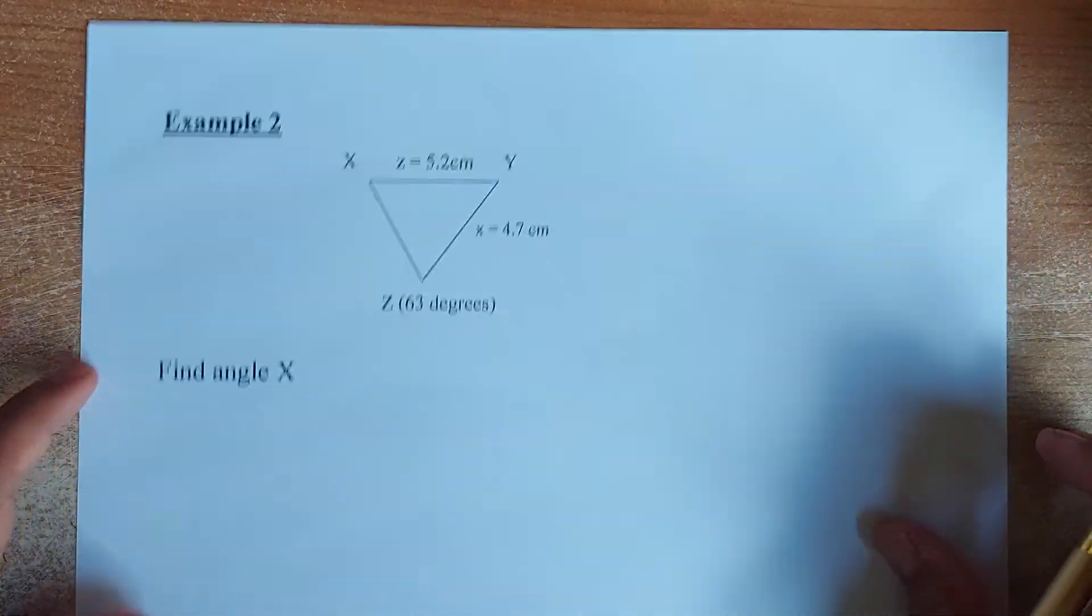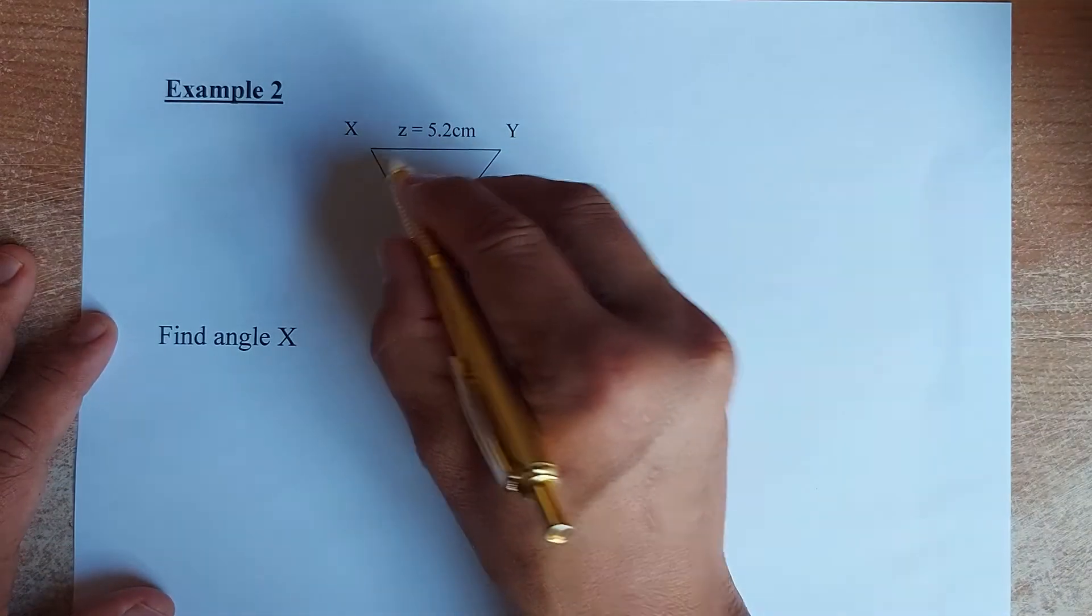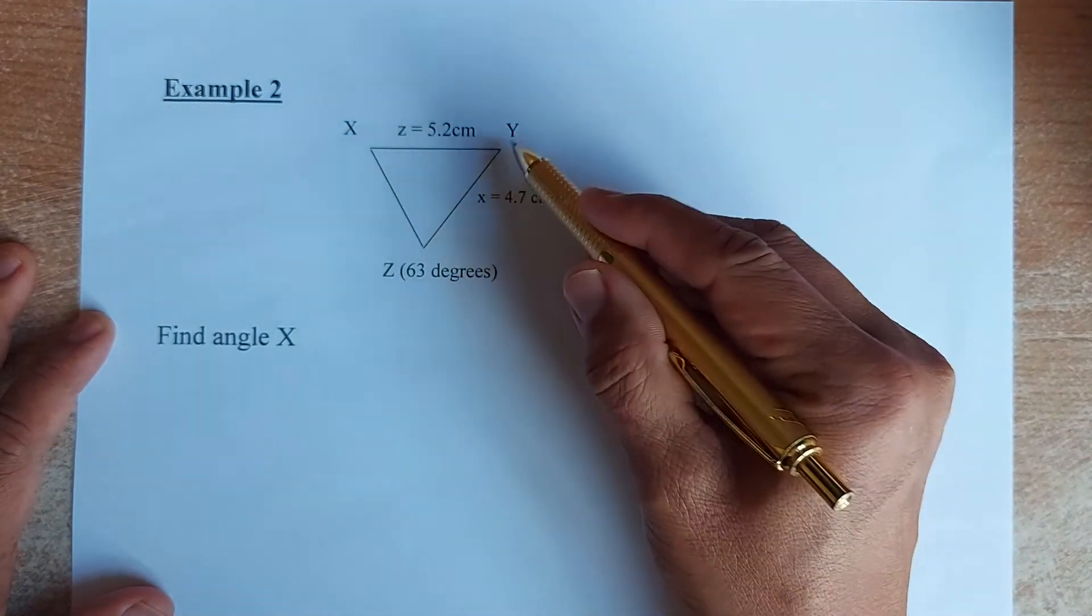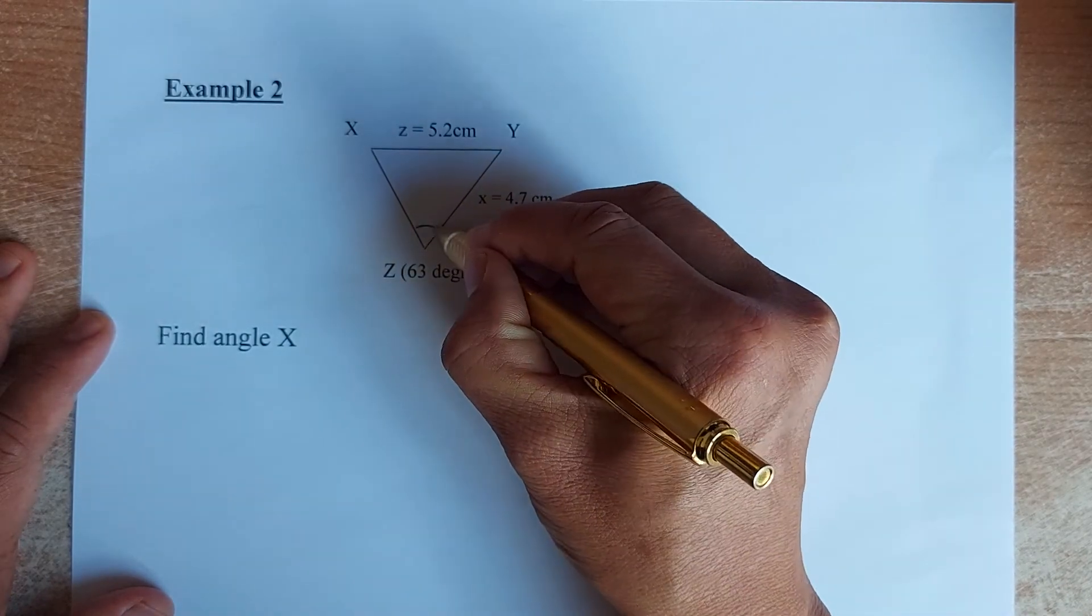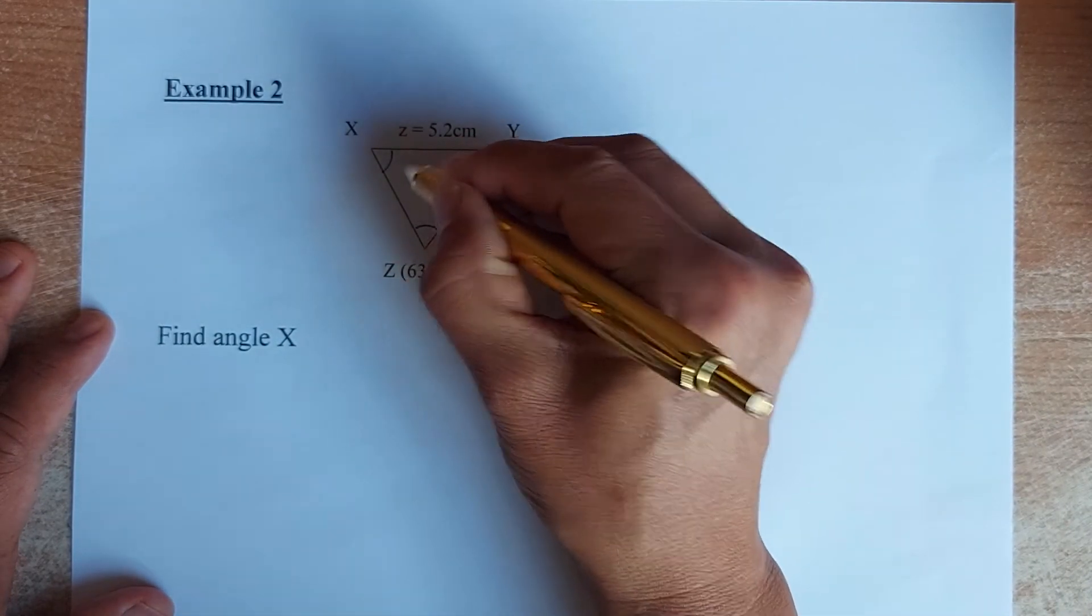Now we shall look at another example. Similar example but just with a difference. It's the same thing all the time. So now you know XY, which is also your Z, is 5.2. Your YZ, which is opposite X, is 4.7. When angle Z is 63 degrees, you are going to find angle X. That's what you want to find.